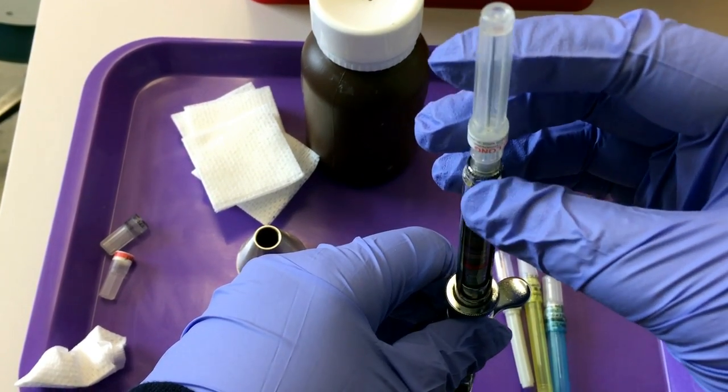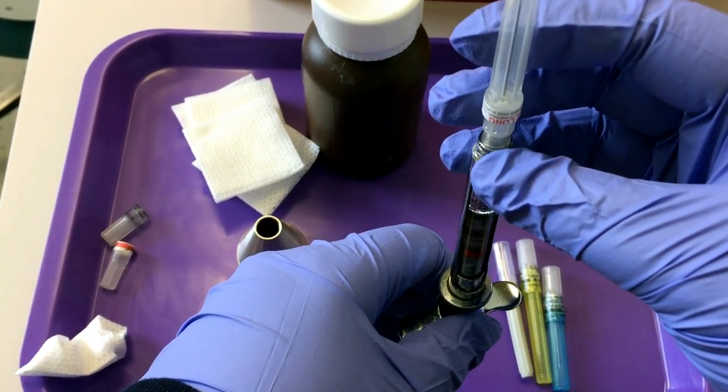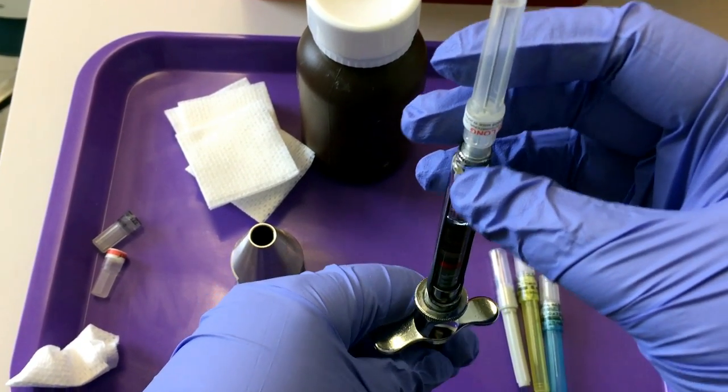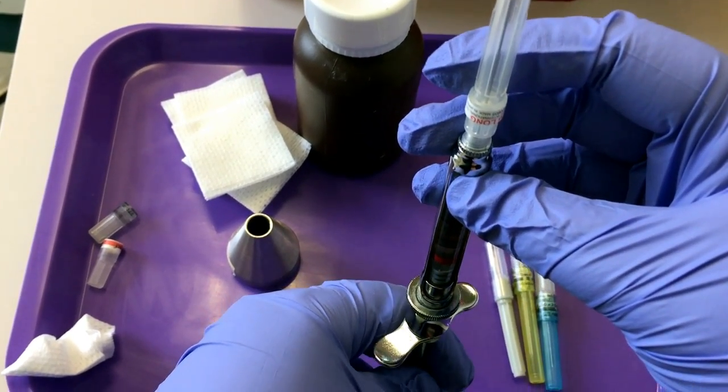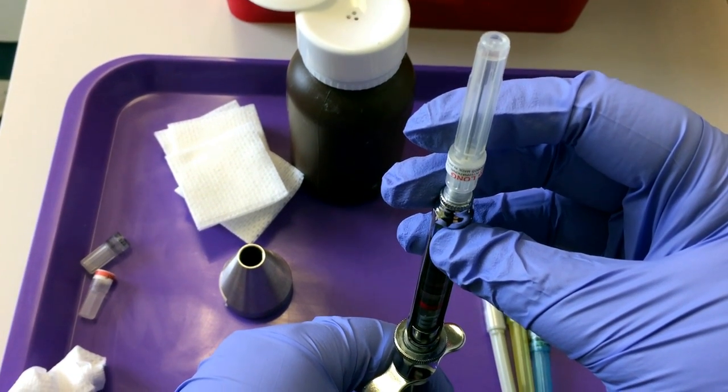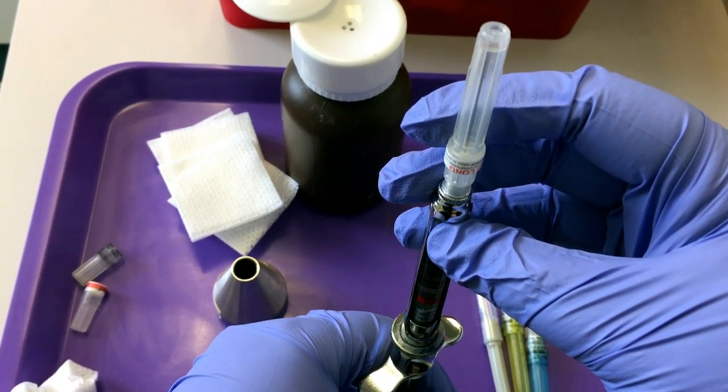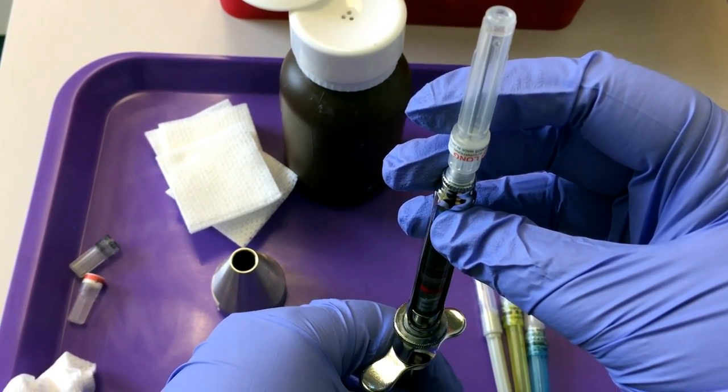Some needle caps are transparent or clear like this one. Others are not. If it's transparent or clear, you can gently push up on the thumb ring and watch until you have two drops of anesthetic come out.